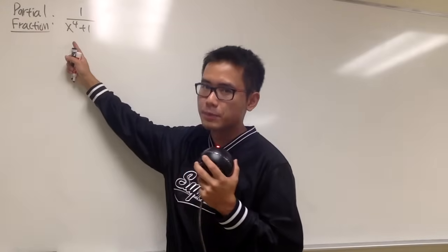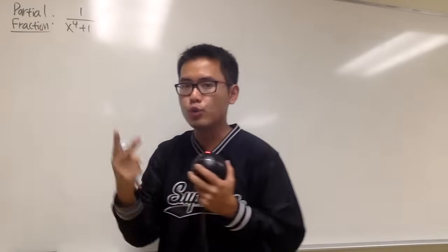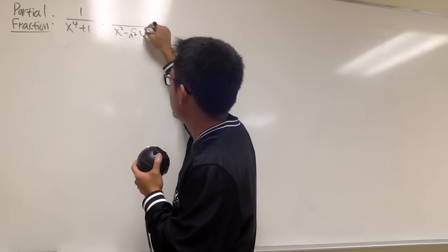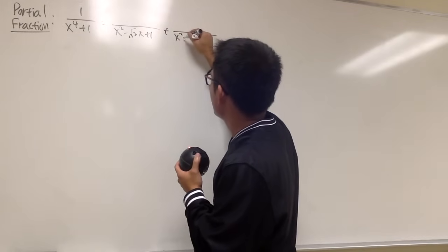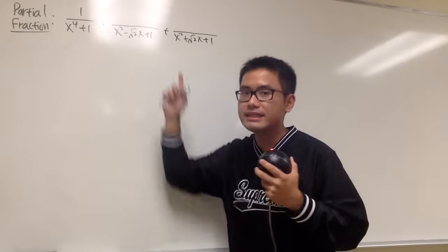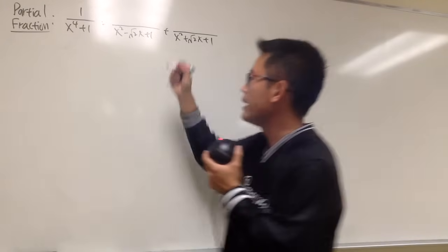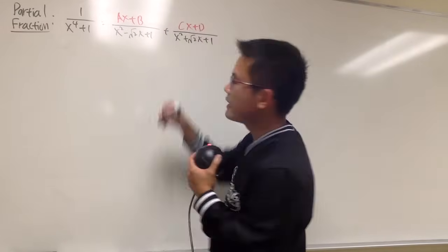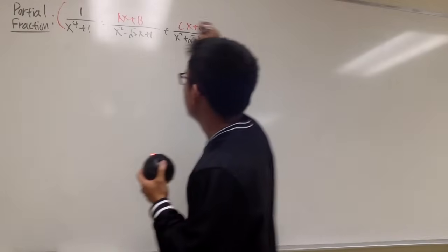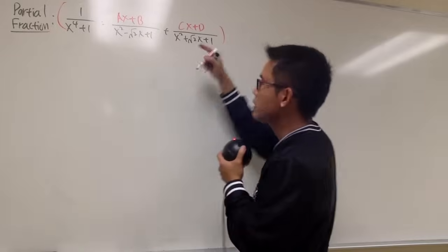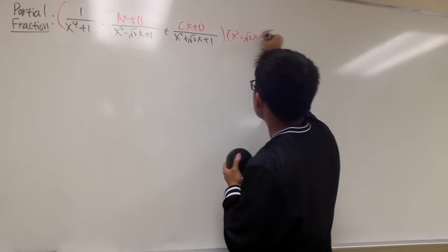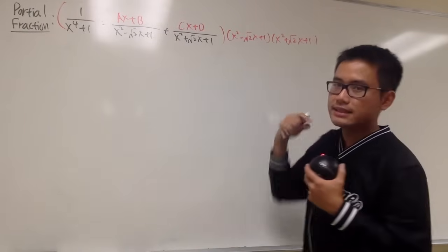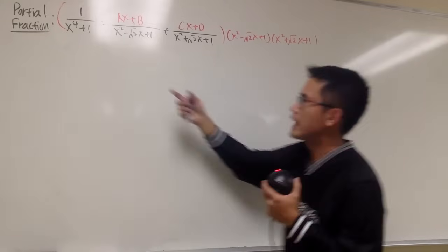Now let's do a partial fraction for 1 over x to the fourth power plus 1. We know from the previous part that this is factorable into two quadratics, so this is going to be something over x squared minus square root of 2x plus 1, plus something over x squared plus square root of 2x plus 1. Because they are both quadratic, we have to have a linear term on top: ax plus b for the first, and cx plus d for the second.